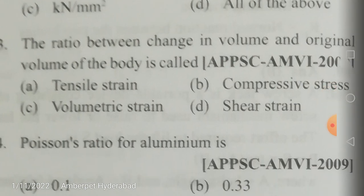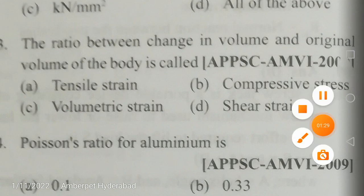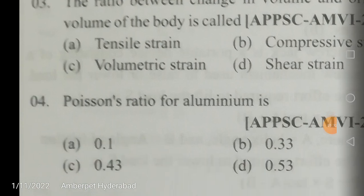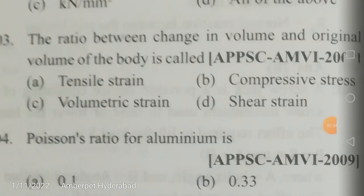The ratio between change in volume and original volume of the body is called volumetric strain. Change in area by original area is called area strain. Change in length by original length is called linear strain. Change in volume by original volume is called volumetric strain. Tensile strain is change in length by original length when the applied load is tensile.